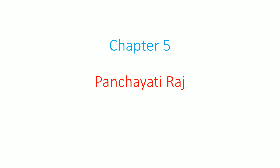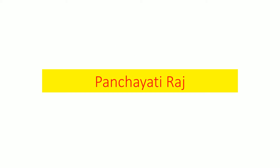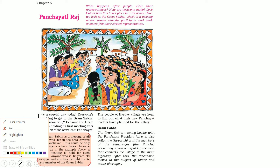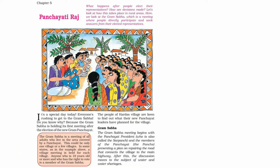This is chapter number 5, which is Panchayati Raj. We are going to talk about Panchayati Raj today — what happens after people elect their representative, how decisions are made, and how this takes place in rural areas.